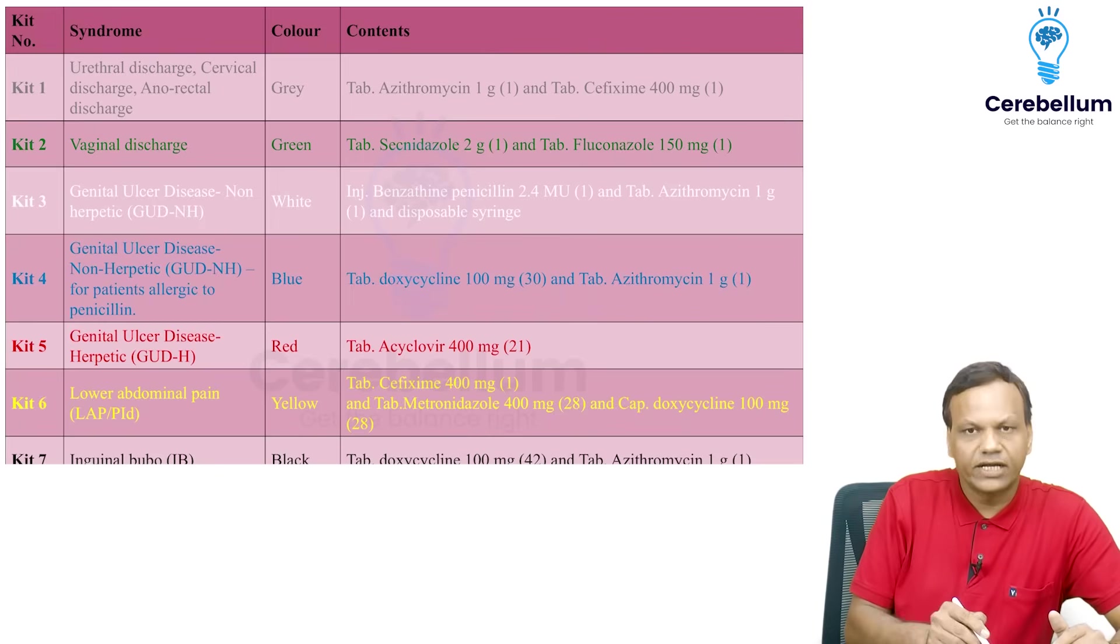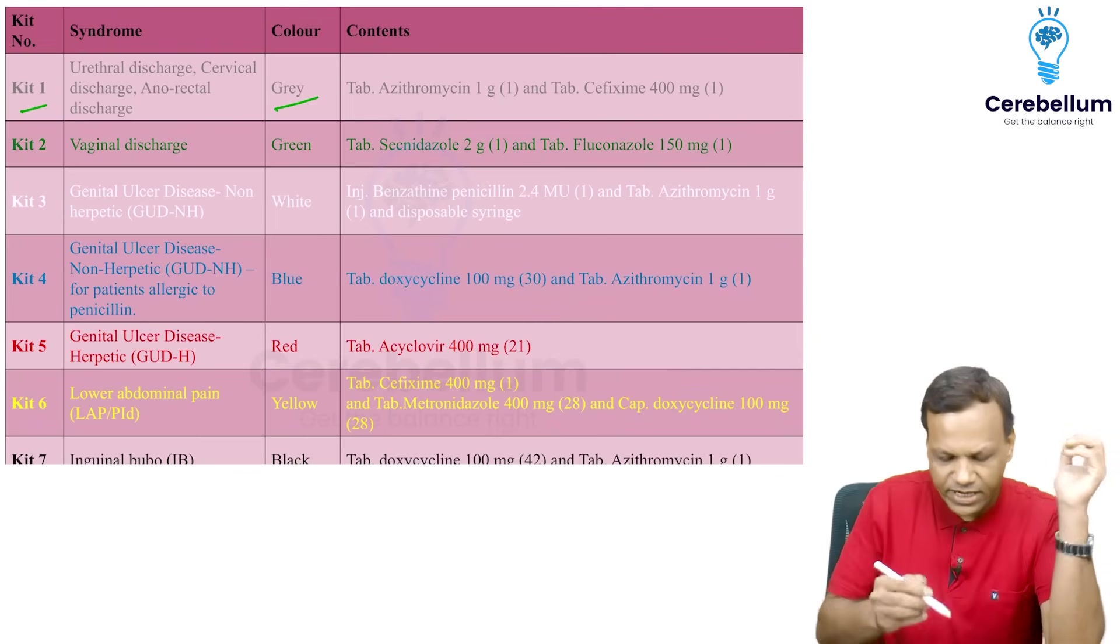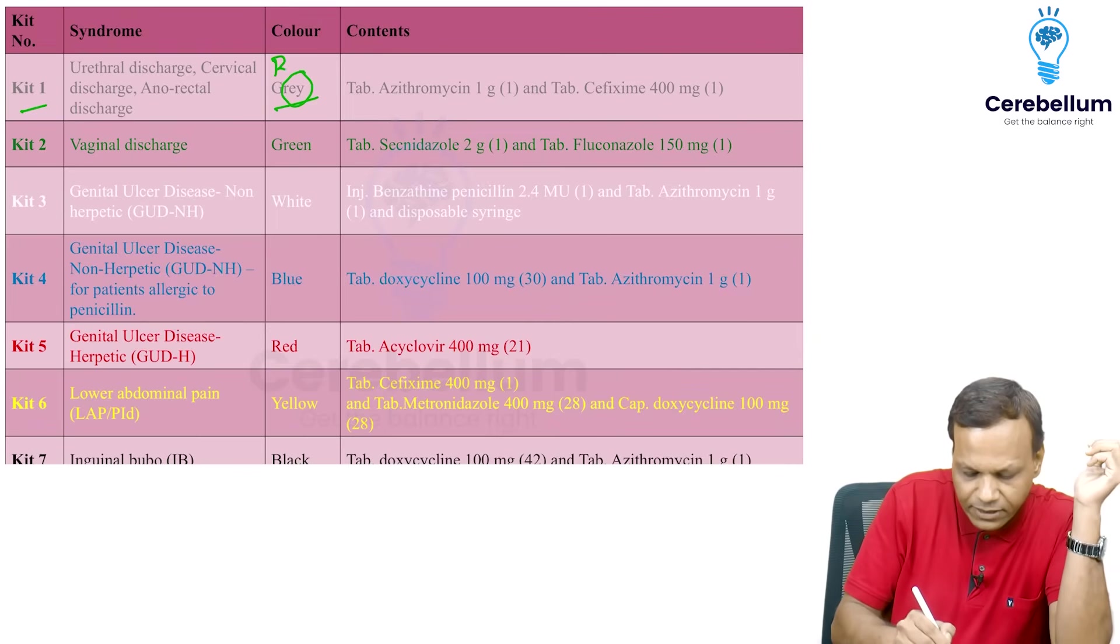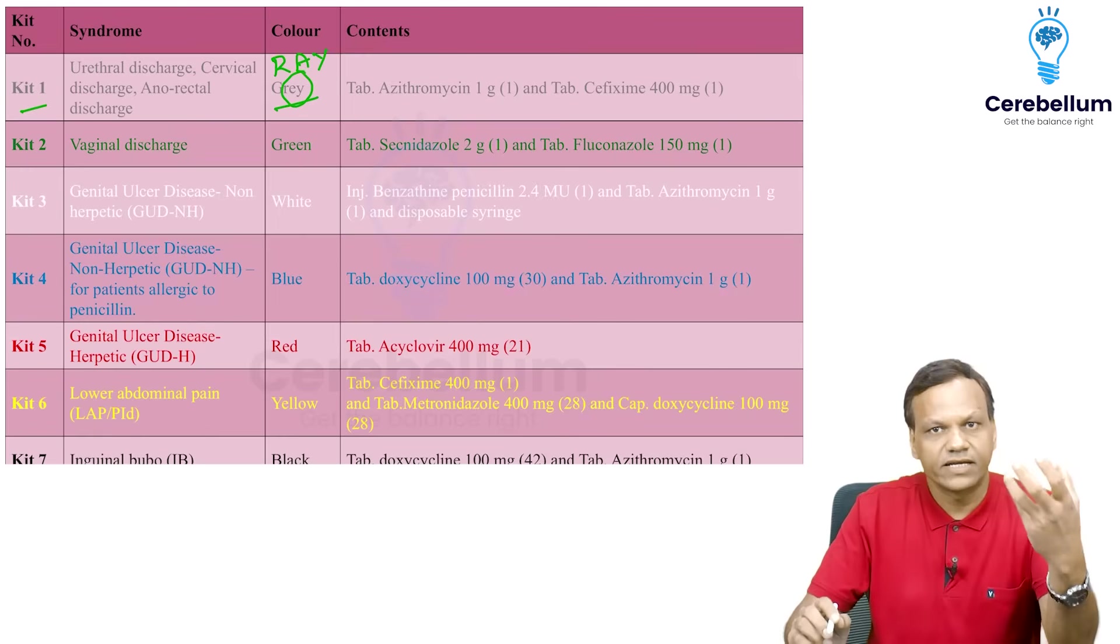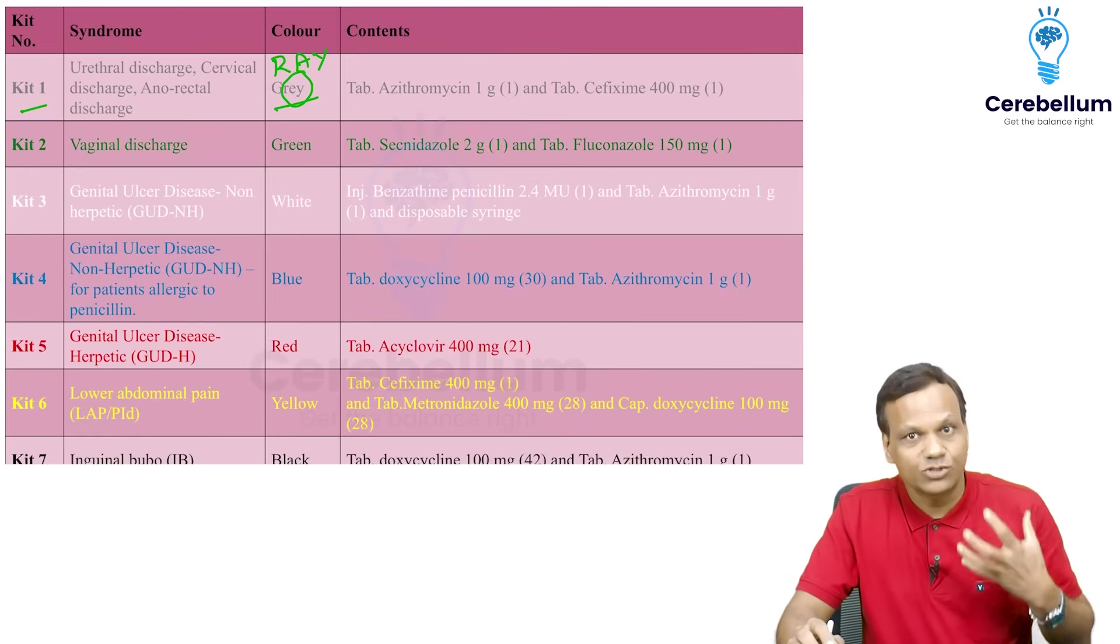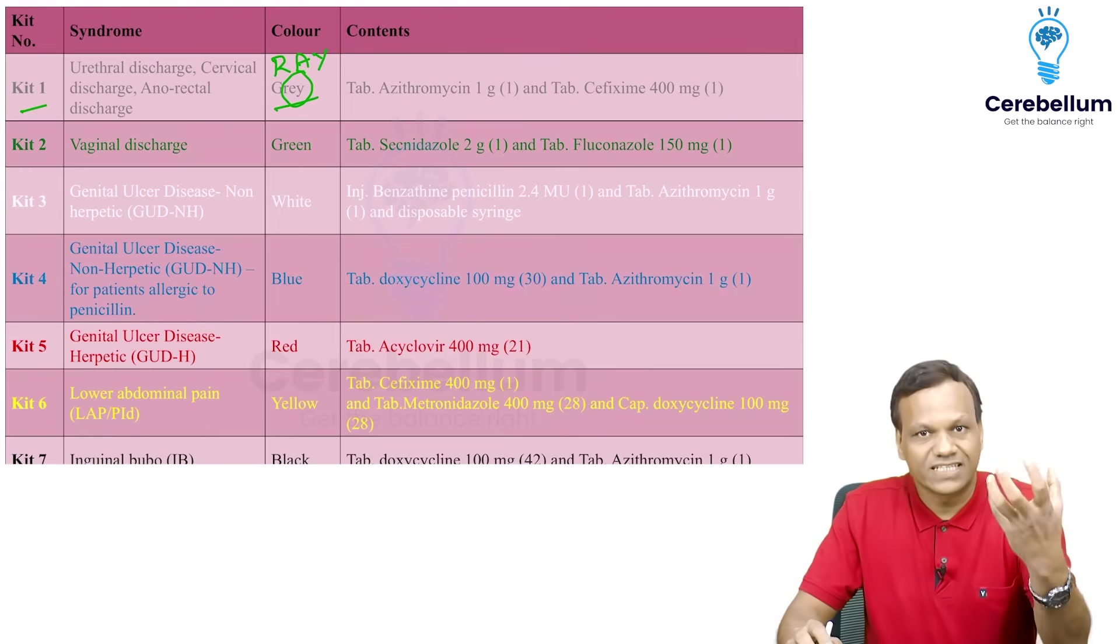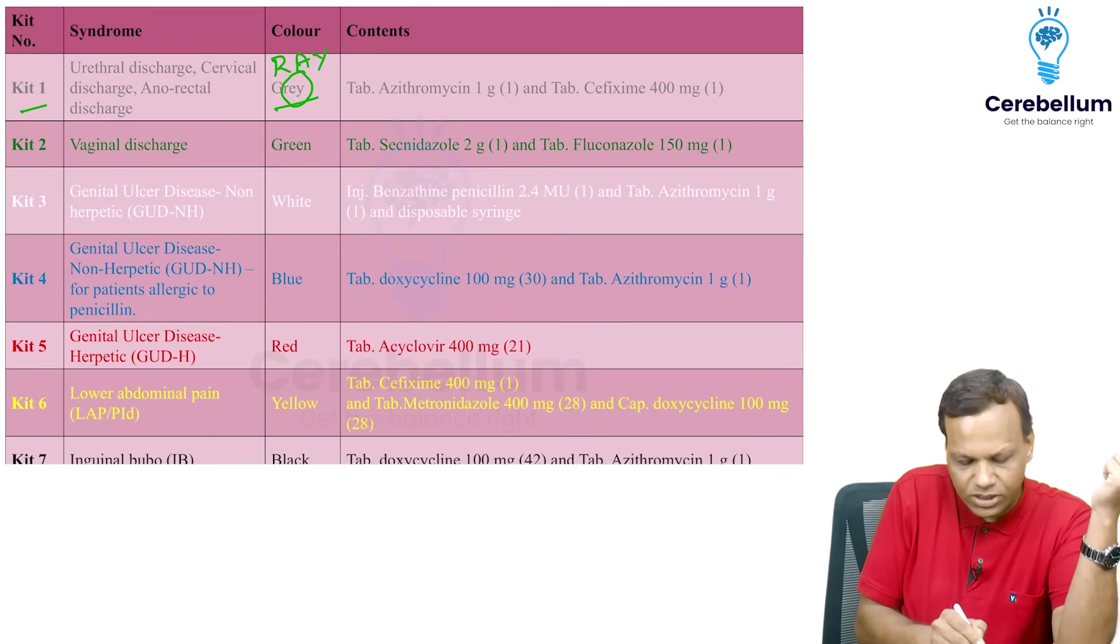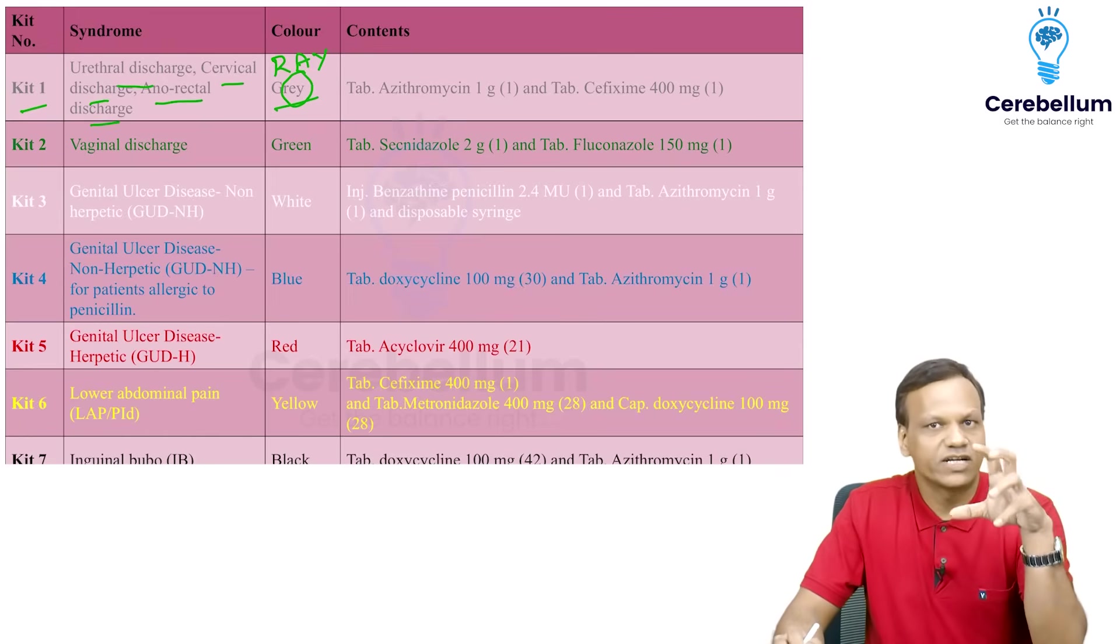So if you see kit 1, it is gray in color. So if you say ray, gray contains ray, sun's ray. When sun's rays come, you start sweating. So discharge. So anything which is discharge, urethral discharge, cervical discharge, anorectal discharge, it is for discharge.